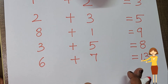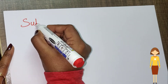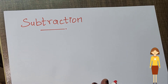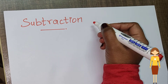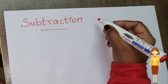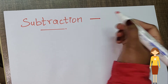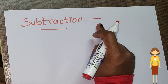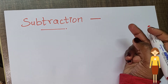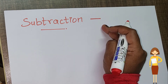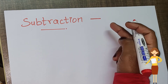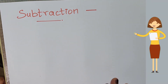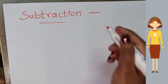So now we are going to subtraction. The symbol for subtraction is minus — one small sleeping line which makes minus. The meaning of subtraction is taking one number or some amount from another, which is called subtraction.